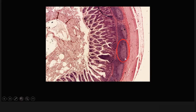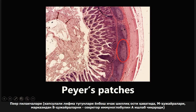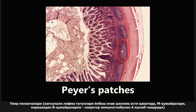This next one is an example of a Peyer's patch. Peyer's patches are unencapsulated lymphoid tissue in the lamina propria and submucosa of the ileum. Peyer's patches contain M cells, which are basically the antigen-presenting cells of the GI system. The B cells in the germinal center of these Peyer's patches can produce secretory IgA, which is the main antibody of the gut.